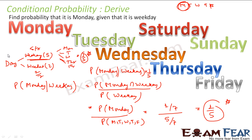Using the graphical way we got one by five, and using the formula — probability of Monday intersection weekday divided by probability of weekday — we also get one by five. This confirms the formula is correct. We will do two or three more proofs to further confirm.